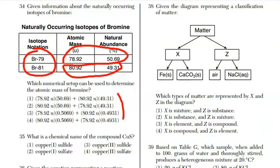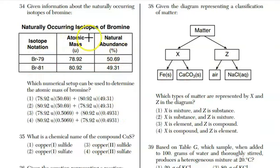Or, if you recall, I need to take my natural abundances out of percent. How do I do that? I divide by 100. And dividing by 100 for each one of these means I'm sliding the decimal two spaces to the left. So it's 78.92 times 0.5069 and 80.92 times 0.4931. You're going to add those together. Again, at this point, you play the matching game. Well, again, the 80 goes with the 0.4931. The 78 goes with the 0.5069, which is choice three.